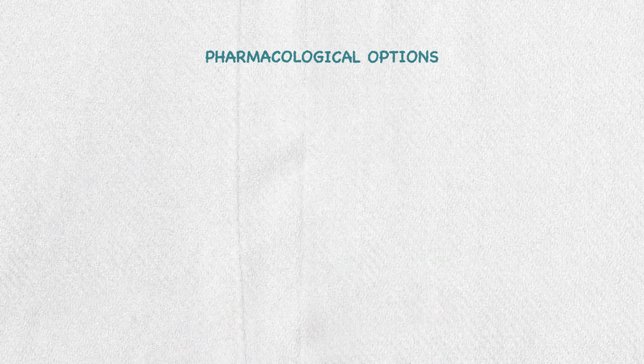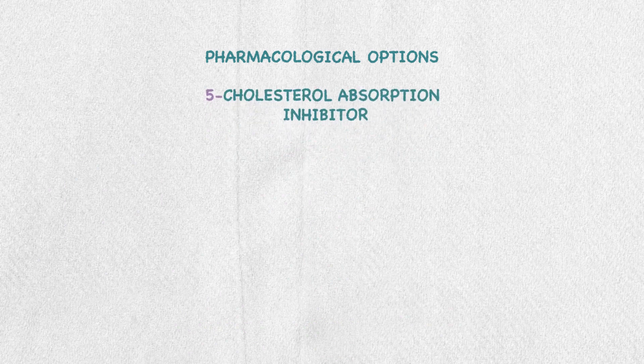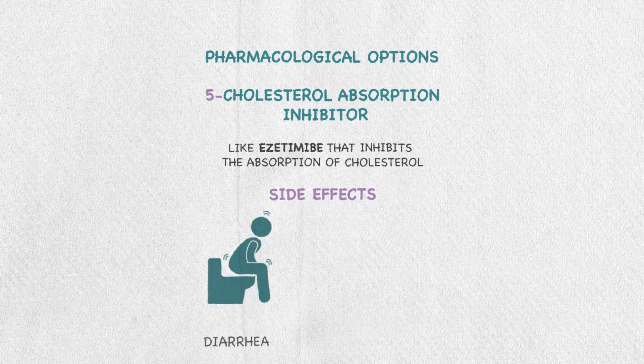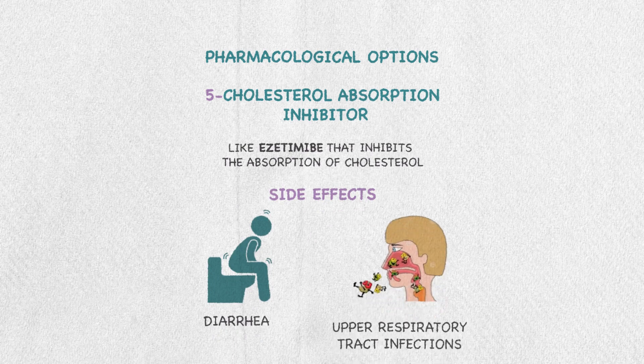The fifth class is the cholesterol absorption inhibitors like ezetimibe. As the name implies, it inhibits the absorption of cholesterol. It might cause diarrhea and upper respiratory tract infection.